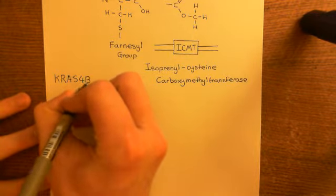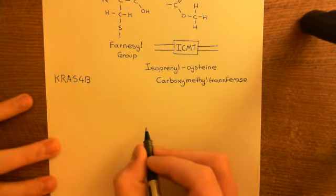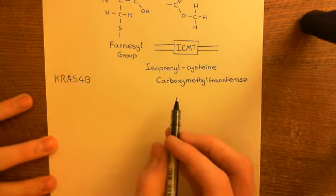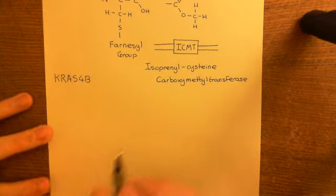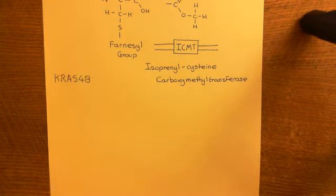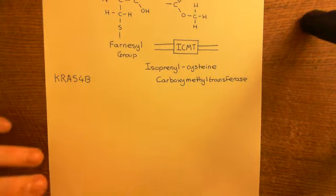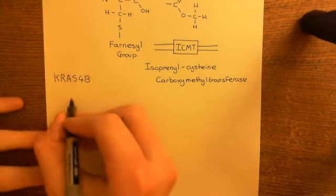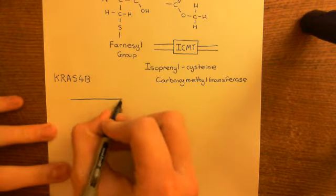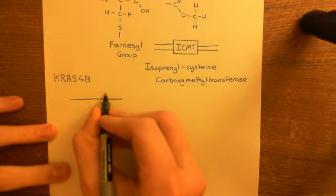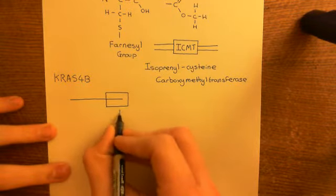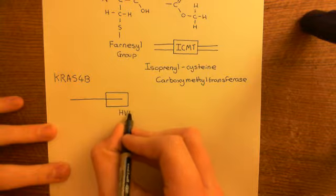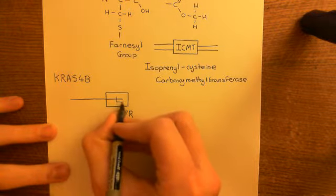Why does KRAS-4B not require palmitoylation to go from the ER membrane to the plasma membrane? The reason is that it has a very special domain known as the polybasic domain, and this is within its hypervariable region. If we have the KRAS polypeptide, or indeed any RAS polypeptide, there is a region at the end known as the hypervariable region, or HVR.